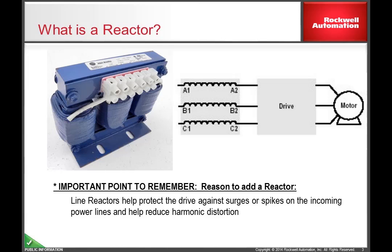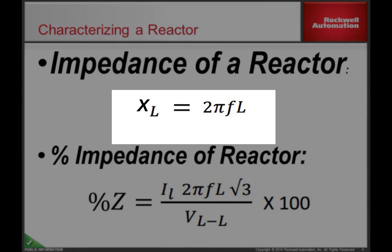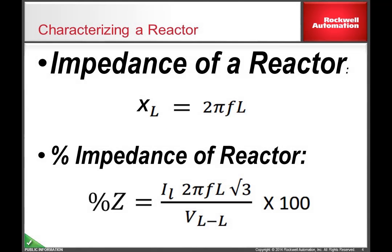One way to characterize a reactor is to calculate the impedance of the reactor. The impedance of a reactor is given by the equation x sub L equals 2 pi times the frequency times the inductance, where the frequency of the reactor will be the frequency of the line voltage the reactor is seeing. In the US, this would be 60 hertz.